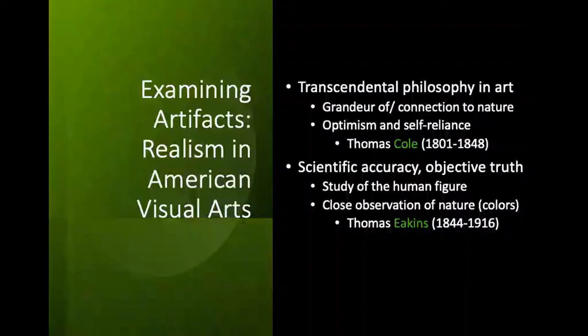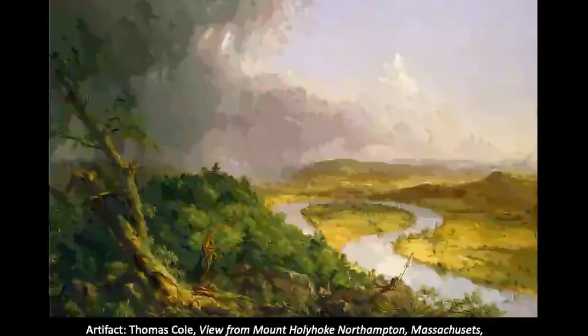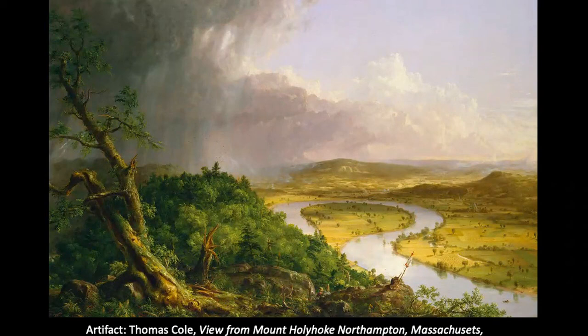American authors are certainly interesting in their approach to realism, and the visual arts are interesting in their realistic depictions too. In some areas, there are pretty clear correlations to transcendental philosophy in art, as artists reveal the grandeur of nature and emphasize not only humanity's connection to nature, but also the American sense of optimism and self-reliance that comes with conquering and understanding nature. Two prominent American artists are Thomas Cole and Thomas Eakins. Thomas Cole was a member of the Hudson River School, a group of American painters whose works glorified nature, and his work definitely exemplifies transcendental philosophy.